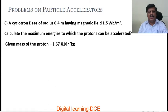A cyclotron D is of radius 0.4 meter, having magnetic field 1.5 Weber per meter square. Calculate the maximum energies to which the protons can be accelerated. We have to calculate maximum energy.